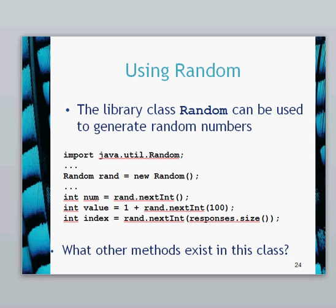When you're looking at the Random class, have a look at other methods in the class to see what else exists. I'd encourage you to look at that in the API now.